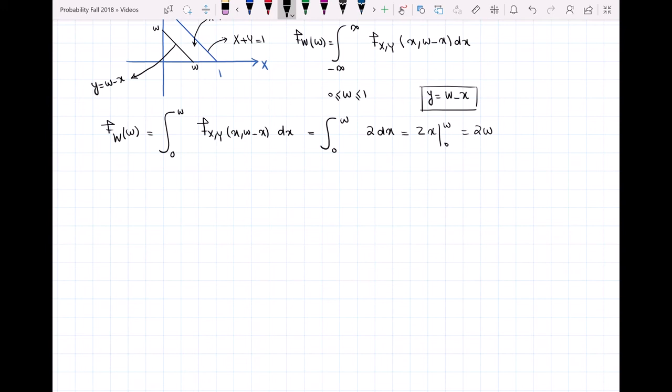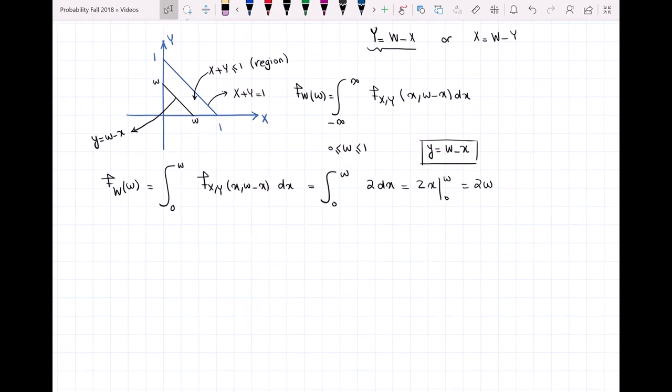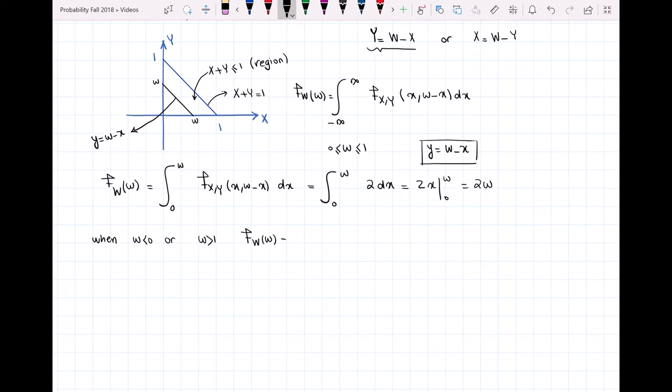What happens when W is less than 0 or more than 1? Clearly, when W is less than 0 or W is greater than 1, our PDF equals 0 because W should always be between 0 and 1.